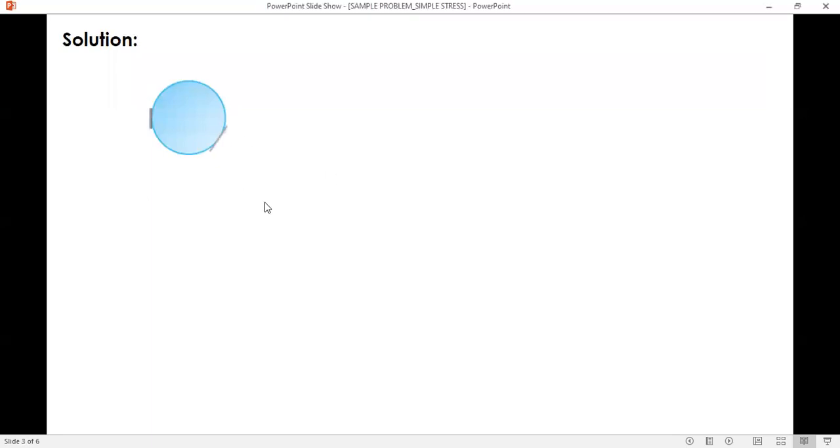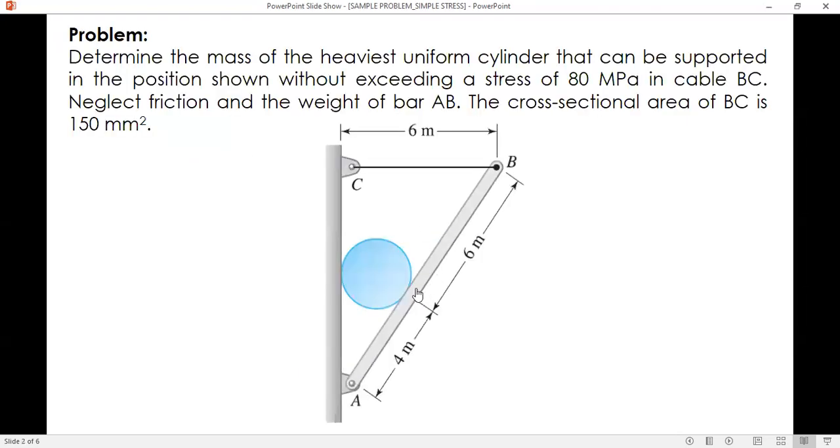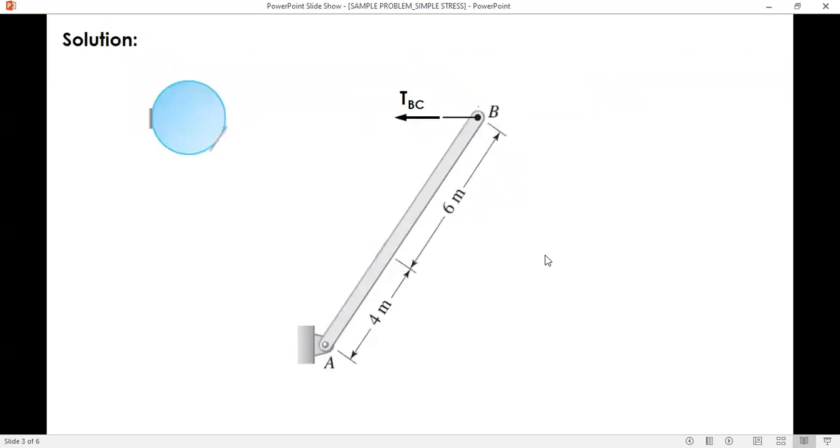This is the cylinder and this is the bar EB. Let's identify the forces starting with bar EB. We have tension of BC. We also have the force between the cylinder and the bar. The cylinder will exert a compressive force towards the bar EB directed in the fourth quadrant, so the force must be perpendicular to the bar. For A, a hinge support, we have reaction in the horizontal and reaction in the vertical.